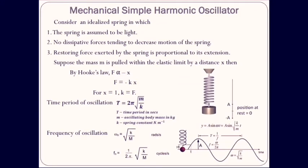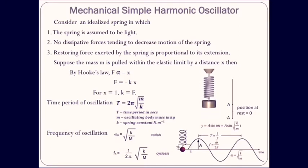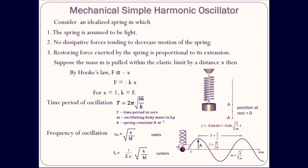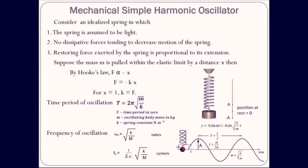The next topic is the mechanical simple harmonic oscillator — in other words, a mass suspended to a spring with vertical vibrations. Here we consider an idealized spring, assumed to be light — meaning its mass is very small compared to the attached mass — and there are no dissipative forces tending to decrease the motion. So the oscillations continue for a long time compared to the period of the spring.